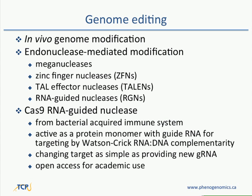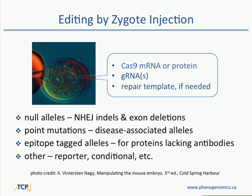We actually inject into the pronucleus, and for us it's very routine to make null alleles, point mutations, and epitope-tagged alleles. After a single round of injection, we have about an 80% success rate for these. For some of the simpler allele types, like the null alleles and exon deletions, we only have to inject about 50 embryos, and for point mutations and epitope-tagged alleles, we inject around 100 to 110 embryos.